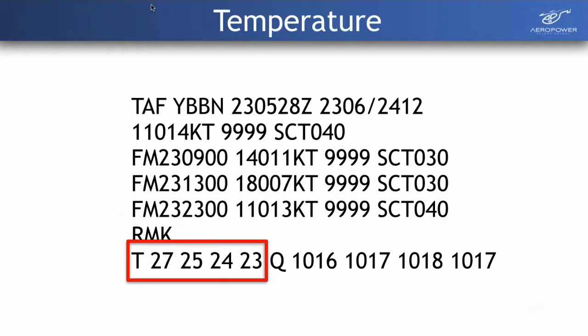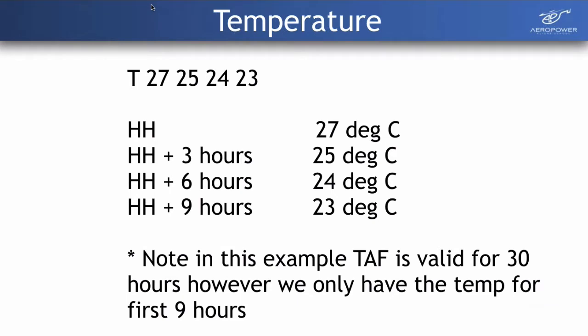The bottom line gives us temperatures and pressures for the forecast period. The temperature line reads T followed by values — for example, 27, 25, 24, and 23. The first temperature is valid when the TAF first starts, then each subsequent value is three hours later. If you want a temperature between two listed values, you simply interpolate linearly — halfway between the first and second would be about 26 degrees. For Brisbane's 30-hour TAF, we only have temperature information for the first nine hours.